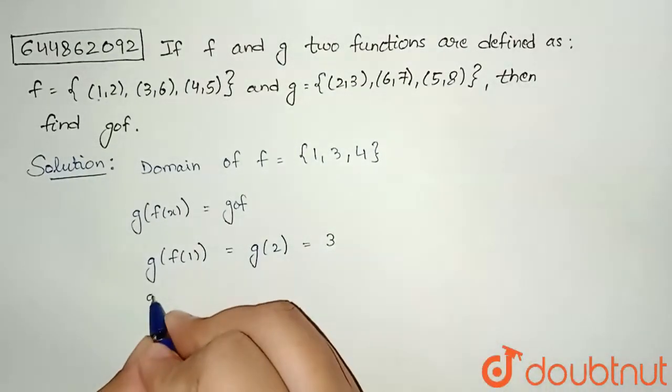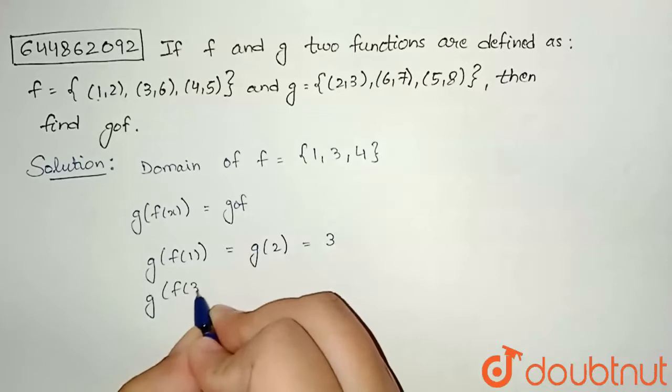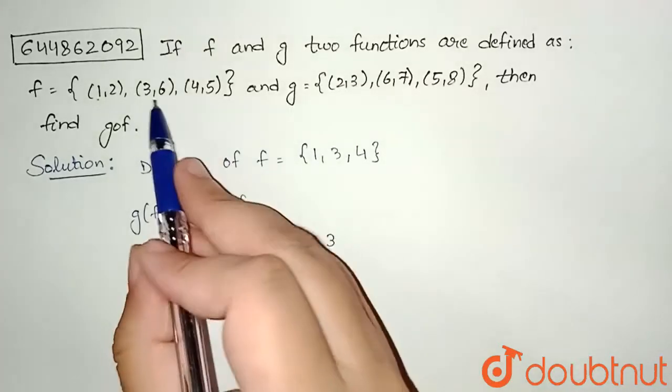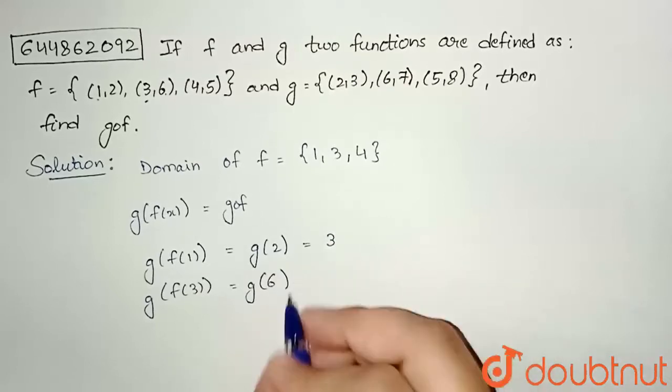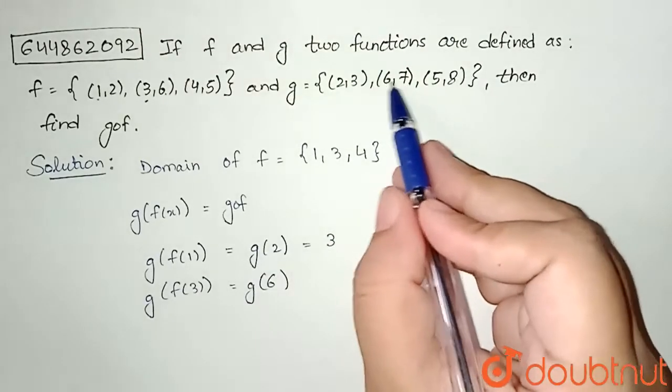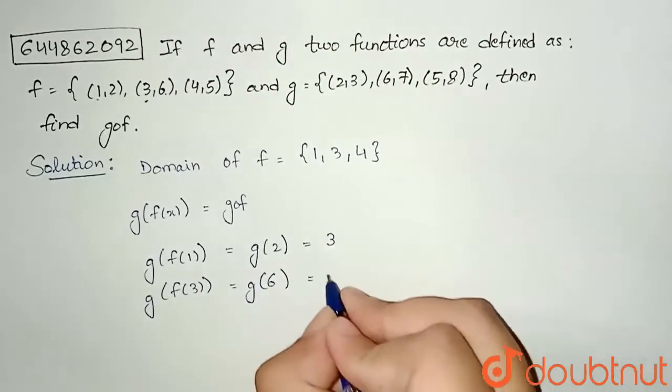Similarly, we will find g of f of 3. So f of 3 value is how much? 6, that means g of 6. And g of 6 is how much? See, for 6 I have 7, so I can write here 7.